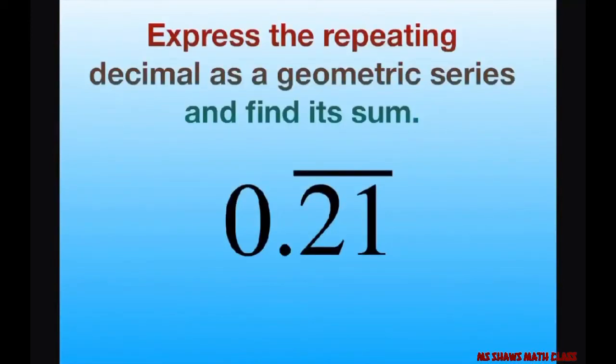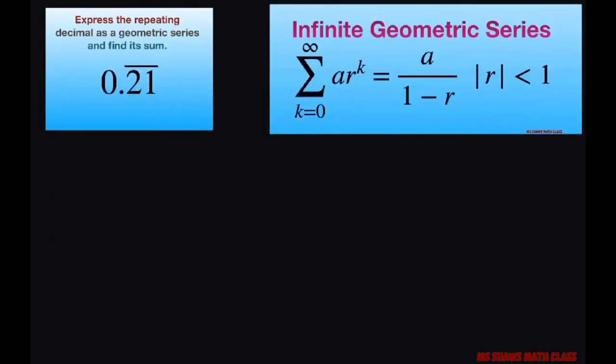Hi everyone, we're going to express the repeating decimal as a geometric series and then find its sum. So we'll get started. Let's let this is the form we want, so we're going to let a and we're going from k equals 0 to infinity.